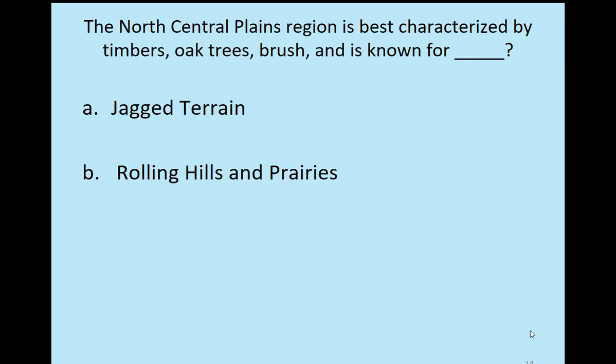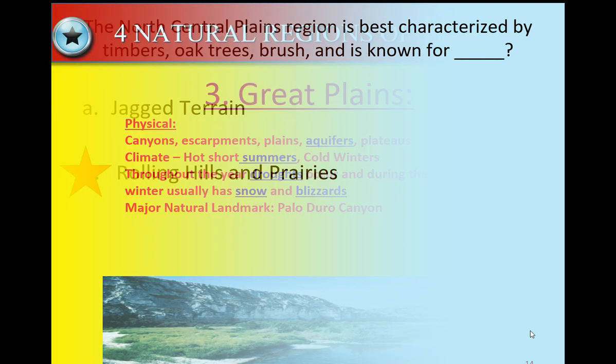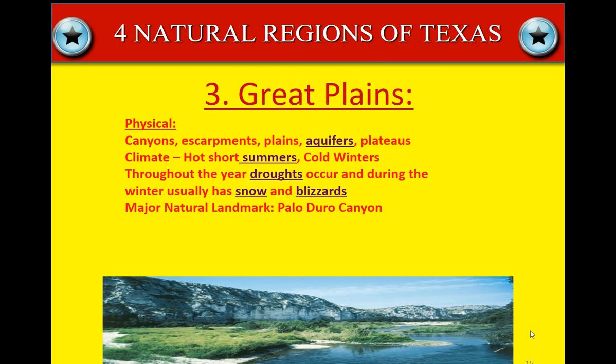The north central plains region is best characterized by timbers, oak trees, and brush, and is known for — is it jagged terrain, or rolling hills and prairies? The answer is rolling hills and prairies.